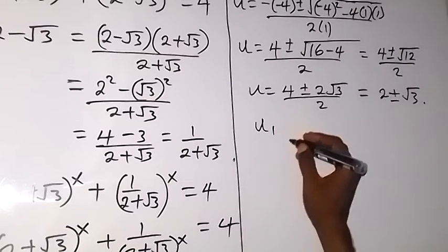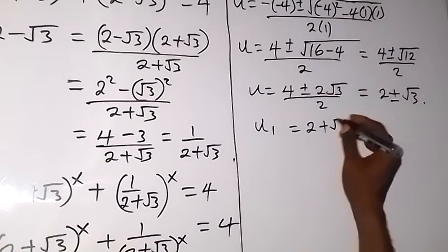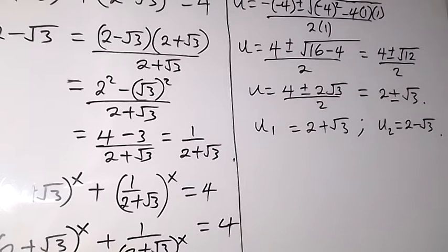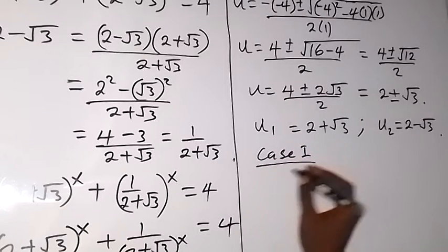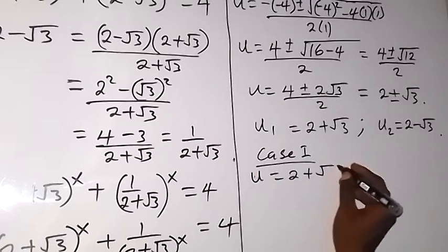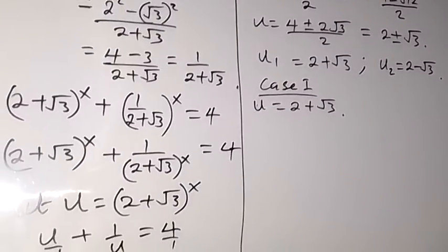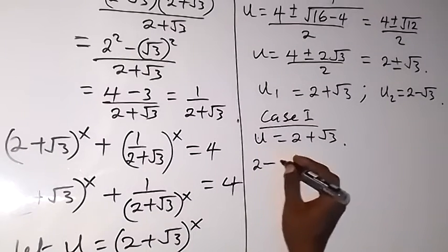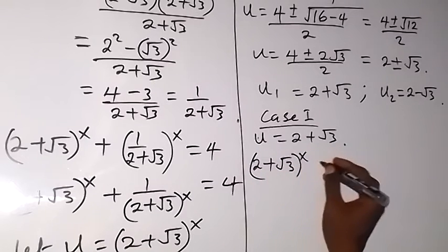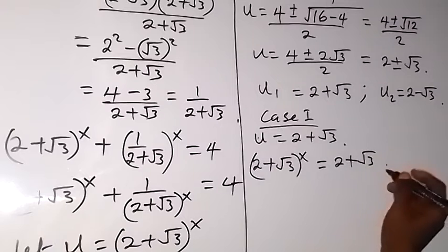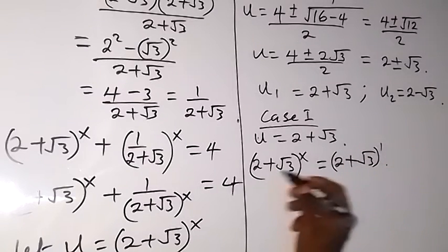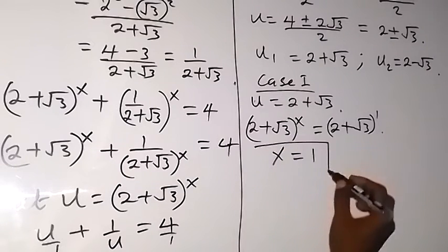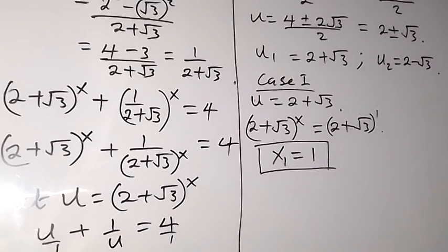The first value, u1, is 2 plus root 3, and the second value, u2, is 2 minus root 3. For Case 1, when u equals 2 plus root 3: recall that u is defined as 2 plus root 3 all to the power of x. So 2 plus root 3 to the power of x equals 2 plus root 3 to the power of 1. Since the bases are equal, by the law of indices we can equate the powers, and therefore x equals 1.